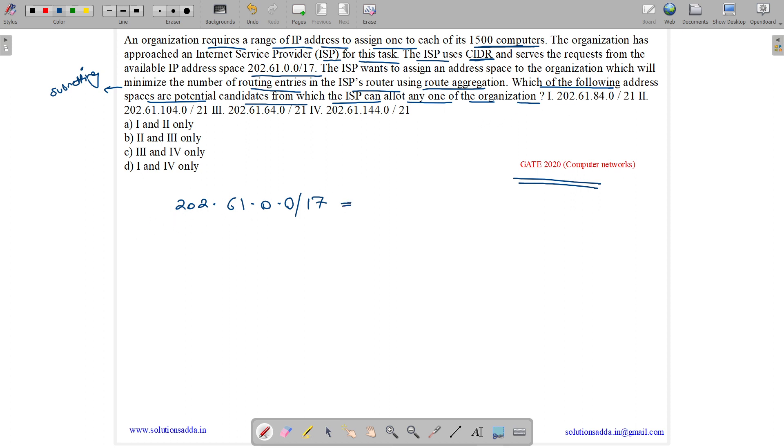So let us first expand this IP address. It is 202.61.0 can be expanded at 00000000 and it can also be expanded into eight zeros.